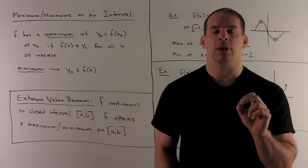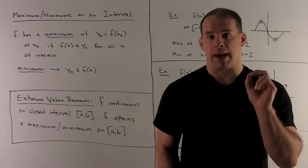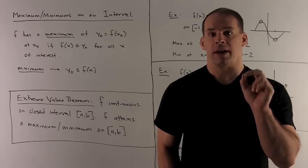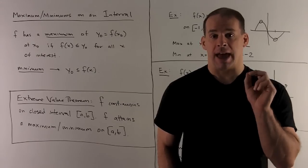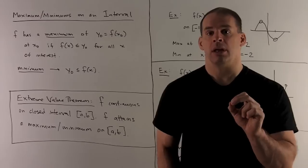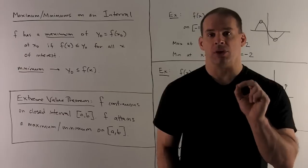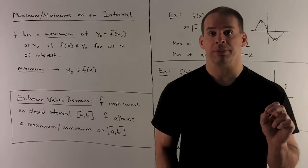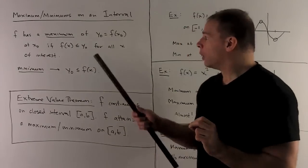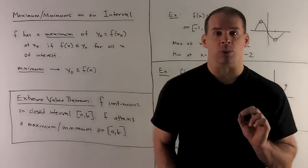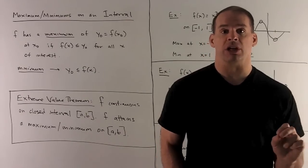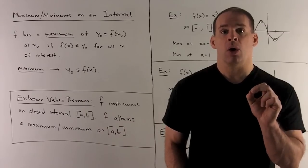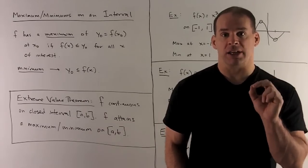Suppose I have a function f that has a maximum on a region. The maximum will be y₀ equal to f of x₀. f has to be defined at x₀, and y₀ is bigger than or equal to f of x for any other x in our region. A key point: to be a maximum, there has to be a point x₀ where f of x₀ actually hits y₀.